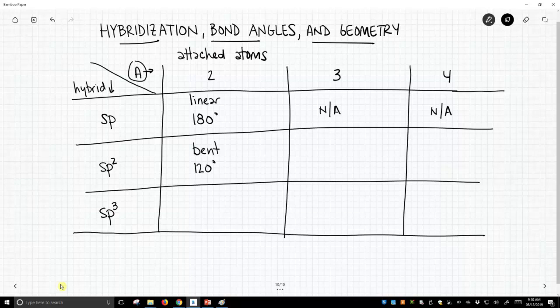If we have three attached atoms in sp2 hybridization we are going to be trigonal planar for our geometry. And again we will still have 120 degree bond angles.